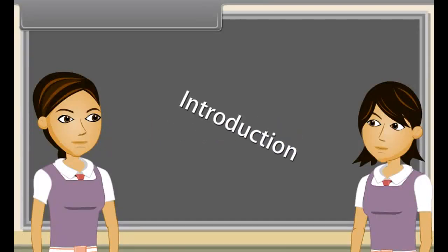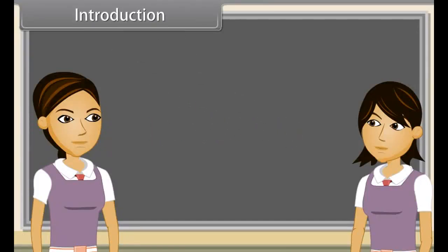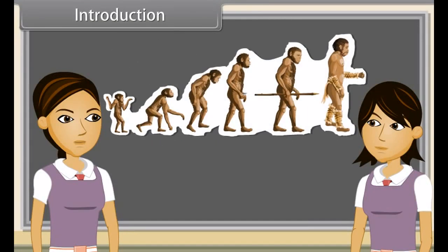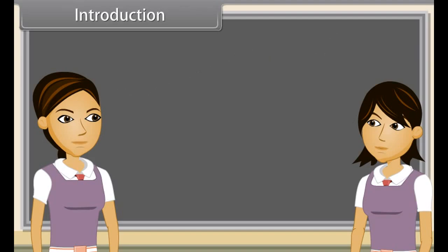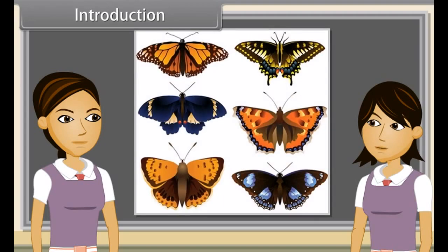Evolution is any change across successive generations in the heritable characteristics of biological populations. Variations are the structural, functional, or behavioral changes from the normal characters developed in living organisms.